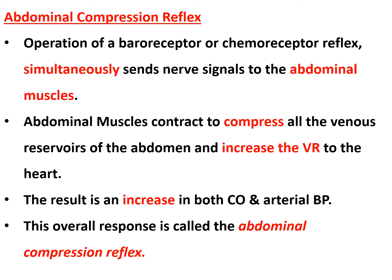Baroreceptors act on the vasomotor center: high impulses from baroreceptors inhibit the vasomotor center, while low impulses stimulate it. The chemoreceptor reflex is opposite — high impulses from chemoreceptors increase vasomotor center activity. When either reflex operates, the vasomotor center simultaneously sends impulses to the abdominal muscles, causing them to contract and compress the venous reservoirs of the abdomen, increasing venous return to the heart. The result is an increase in both cardiac output and arterial blood pressure.